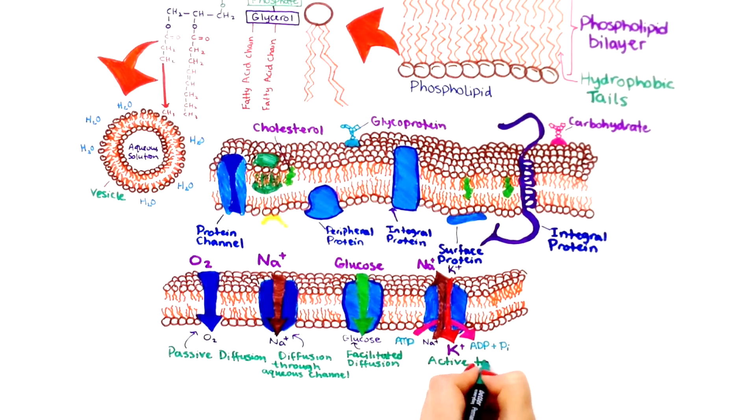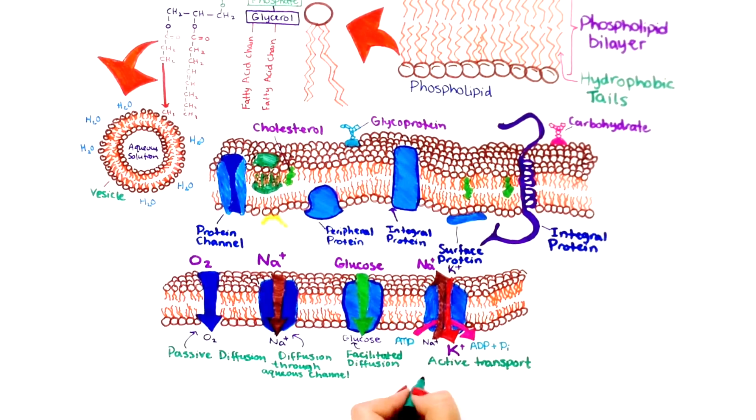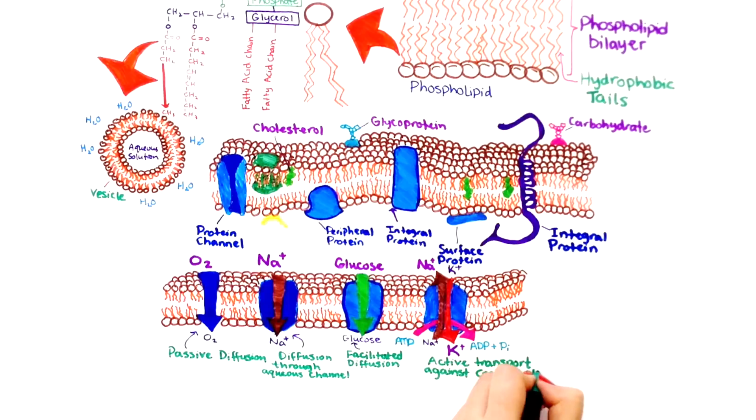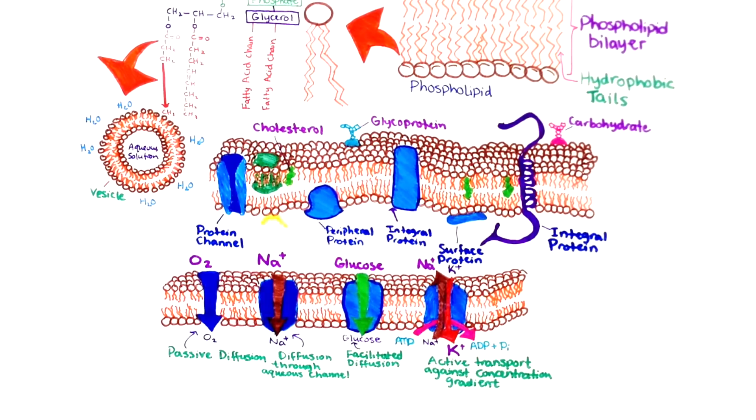Active transport is the pumping of substances across a membrane by a transmembrane protein pump molecule. The protein binds a molecule of the substance to be transported on one side of the membrane, changes shape, and releases it on the other side.